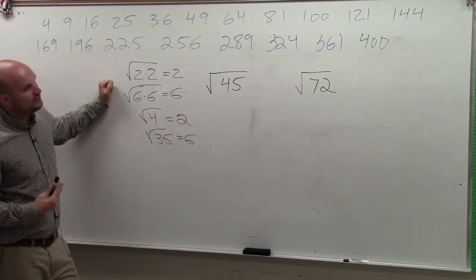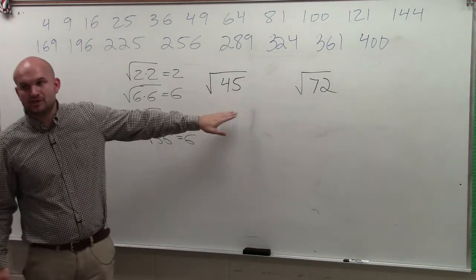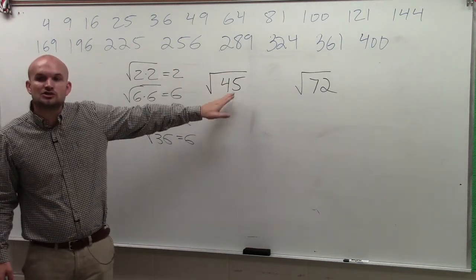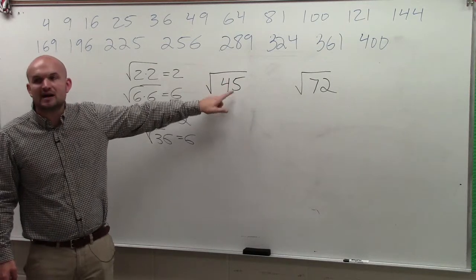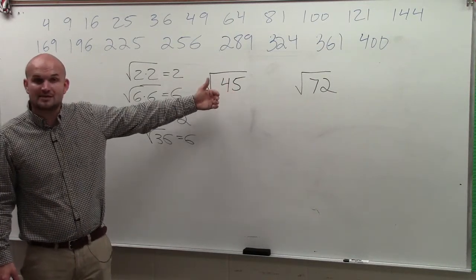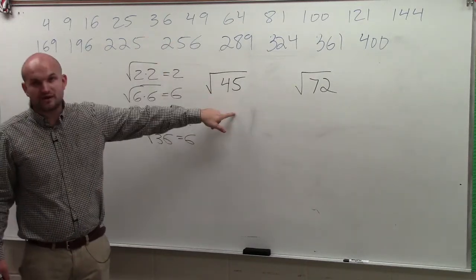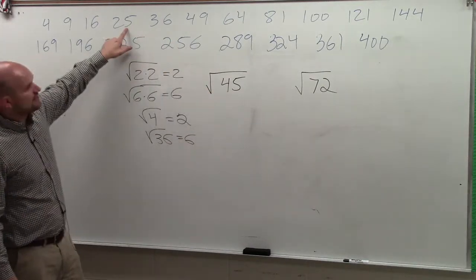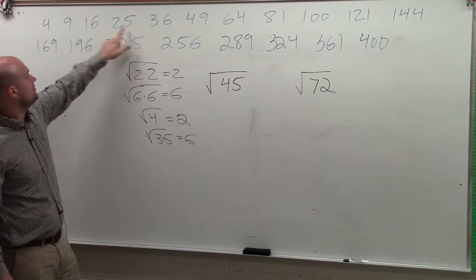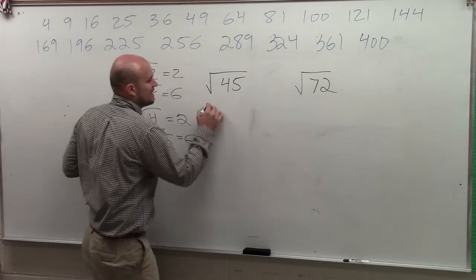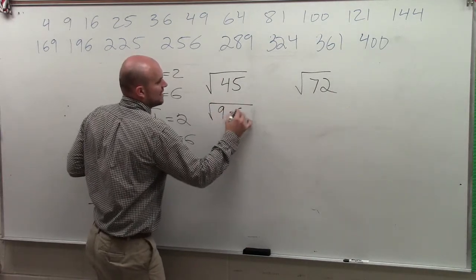Now, to do this, what we're going to do is, again, we need to rewrite this problem. So what I want to do is identify what is the largest square number that evenly divides into 45. So to do that, you start at the largest possible number it could be, 36. Does 36 divide into 45? No. Does 25 divide into 45 evenly? No. 16? No. 9? Yes. I can rewrite this as 9 times 5.